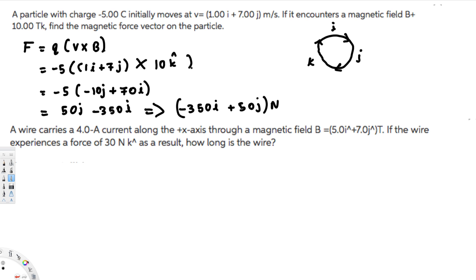Let's go ahead and do the next question. The next question is asking: a wire carries 4 amperes of current along the x-axis through a magnetic field B. B is given by a specific value. If the wire experiences a force of 30 newtons in the k direction, how long is the wire? We are trying to find the length.